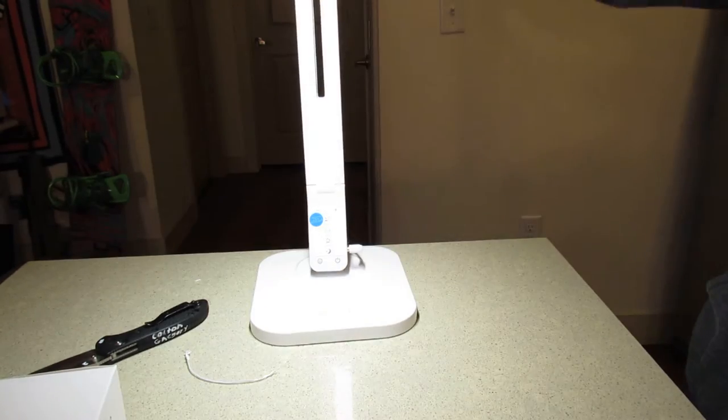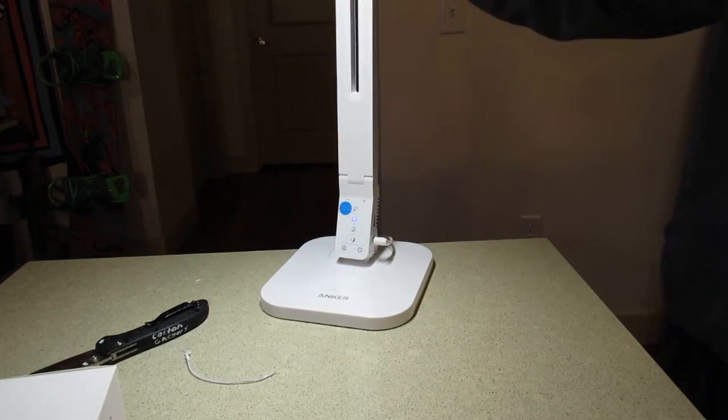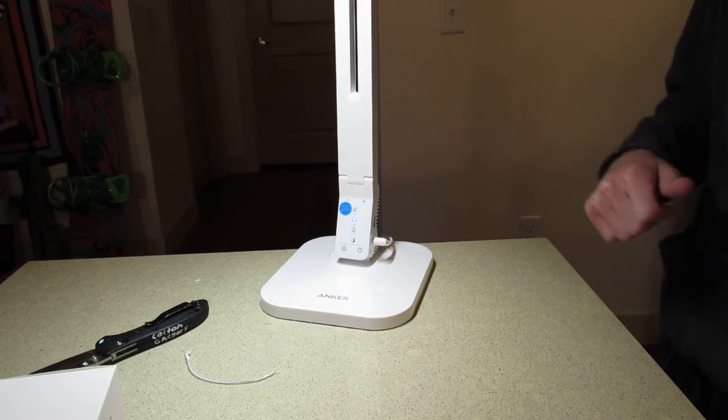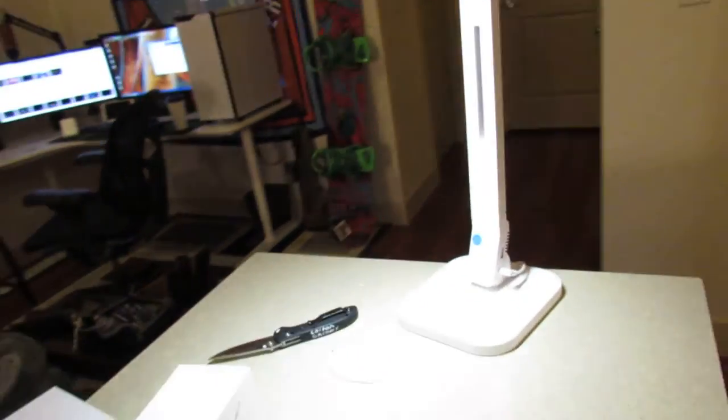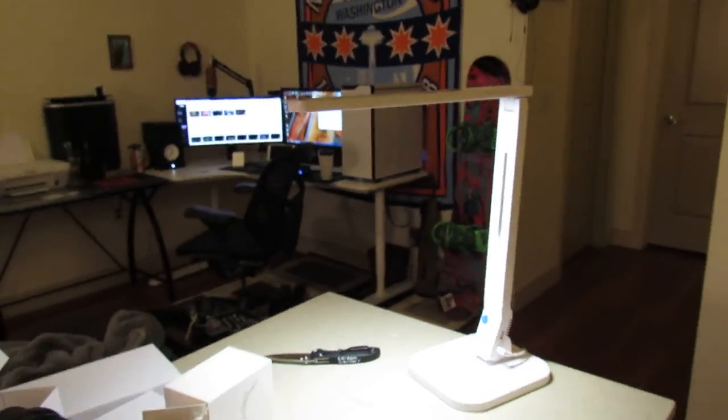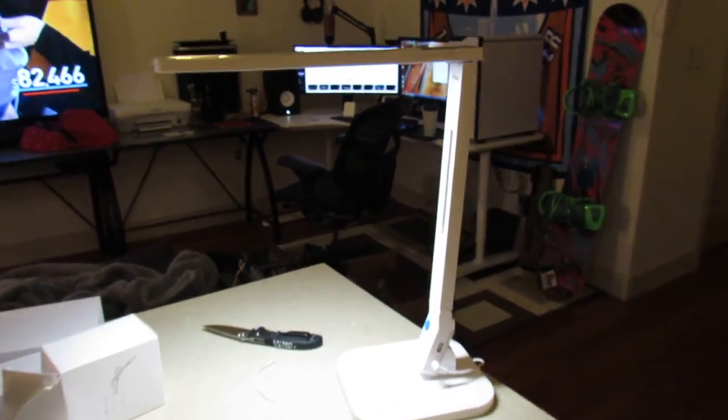So, yep. It's the Anker desk lamp. It's like $45 on Amazon. I think it's going to be a good addition to the setup over there because I'm kind of working with a white theme around the whole setup. We'll pop that bad boy right there and we'll be good to go. I appreciate y'all watching. Y'all have a good one.